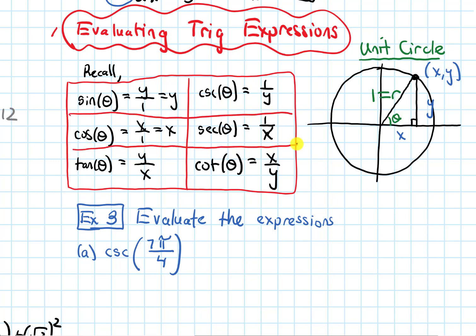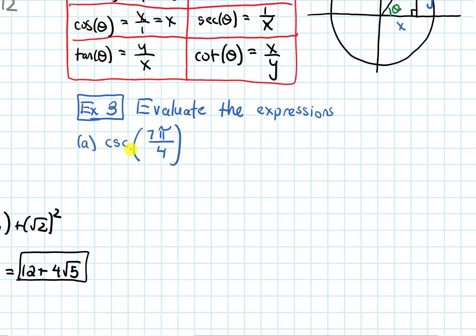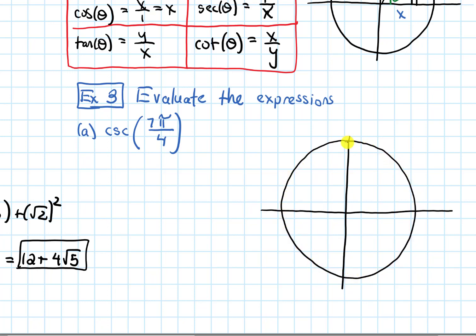Now let's do an example. This is example three, continuing the numbering from this section. Part A asks for cosecant of 7π over 4. I want to begin by drawing the unit circle and figuring out where 7π over 4 is on the unit circle. On the positive x-axis, this is where an angle of 0 is. 7π over 4 is a positive angle, so I measure it going counterclockwise.